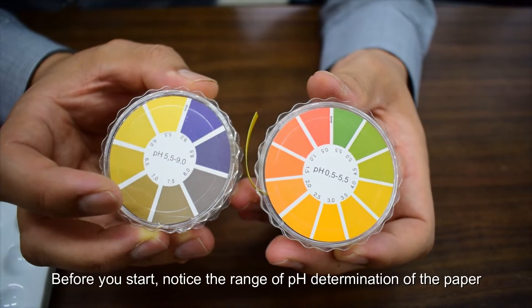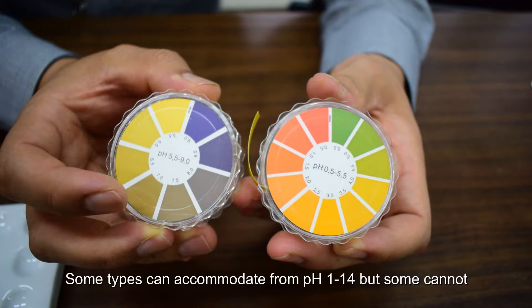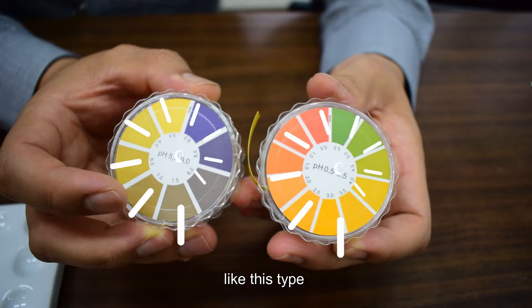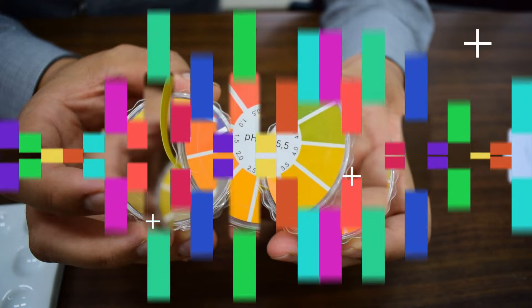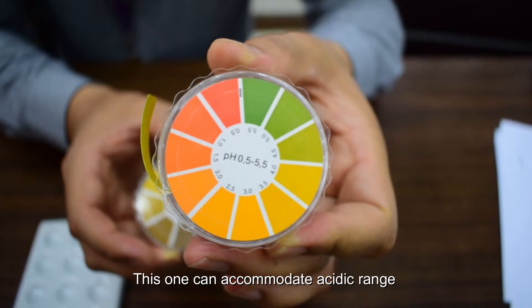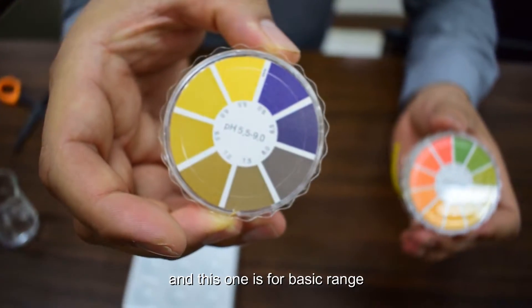pH Determination. Before you start, notice the range of pH determination of the paper. Some types can accommodate from pH 1 up to 14, but some cannot, like this type that we will use in the laboratory. This one can accommodate acidic range and this one is for basic range.